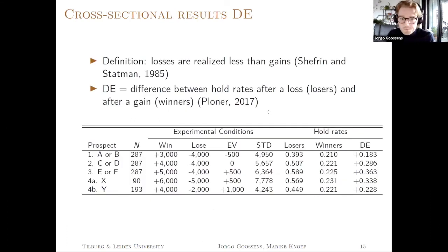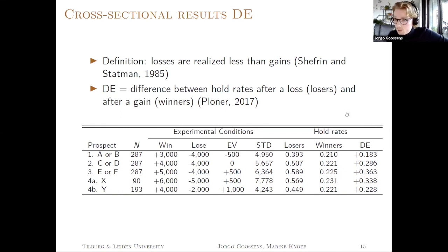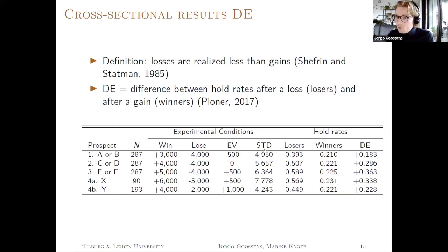The results are shown here. The definition of the disposition effect is that losses are realized less than gains — stated differently, you hold on to losers more often than to winners. We have four prospects, repeating that decision screen four times. You see that the hold rates among losers are strictly larger than the hold rate among winners. This precisely indicates that individuals tend to hold on to losers more frequently than to winners — a strong indication for the disposition effect in the cross section, in line with previous finance literature. You also see that if we increase the standard deviation of the underlying investments, the disposition effect becomes stronger.